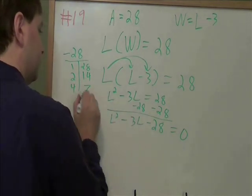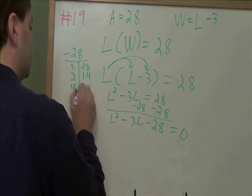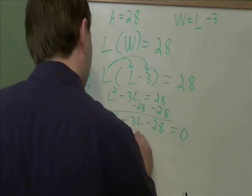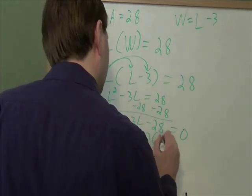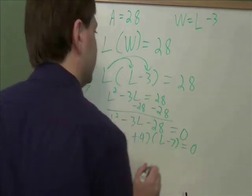And to get minus 3 when you add them together, you would need a negative 7 and a positive 4. So this is l plus 4, l minus 7 is equal to 0.